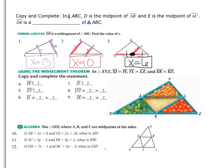Using the mid-segment theorem in triangle XYZ: XJ is congruent to JY, YL is congruent to LZ, and similarly for the third side. From this information, we can conclude that J, L, and K are midpoints. Since they're midpoints, JL is a mid-segment, LK is a mid-segment, and JK is a mid-segment.